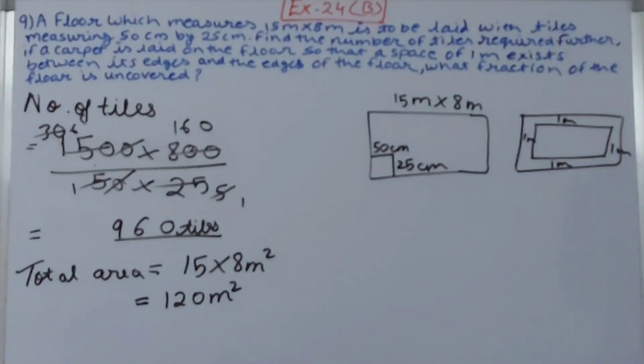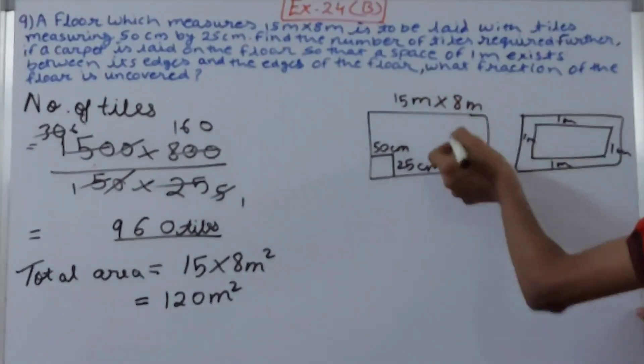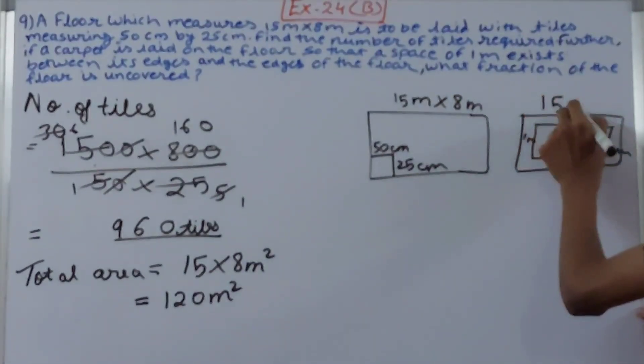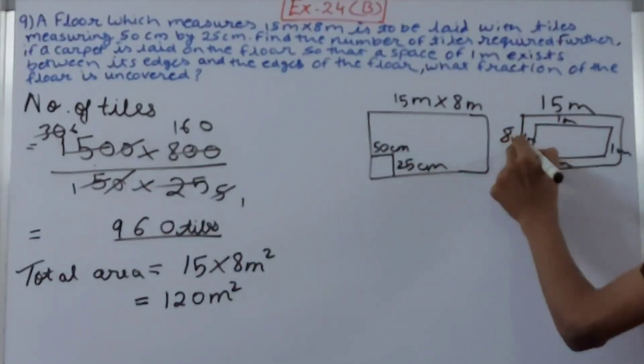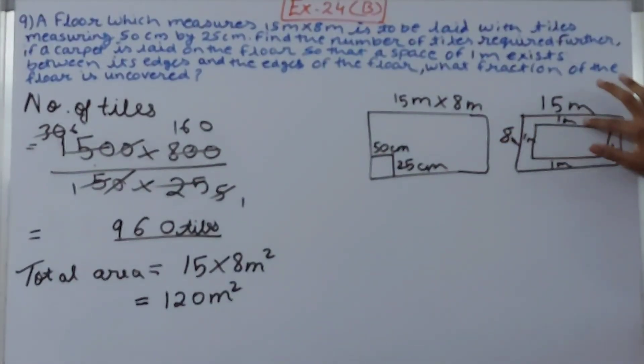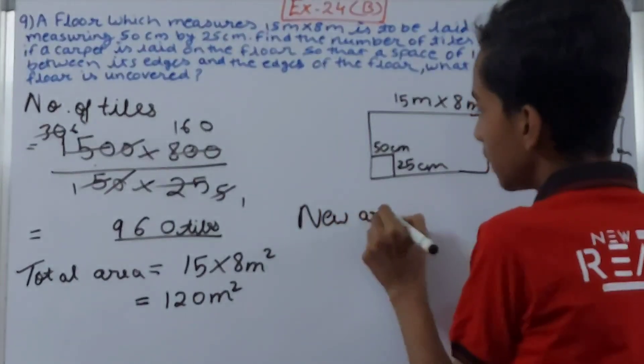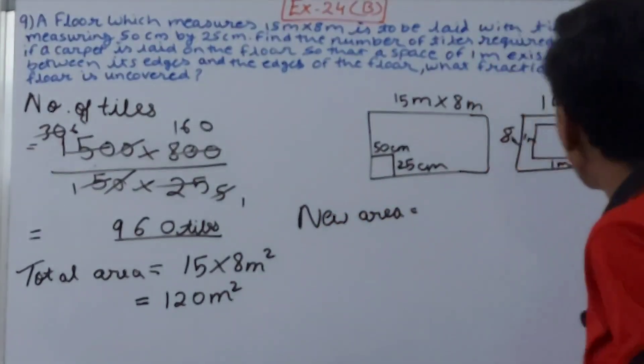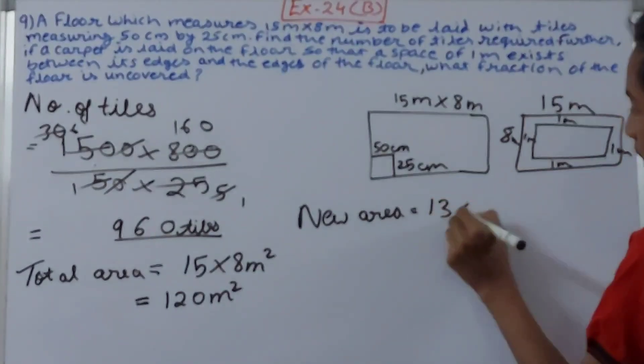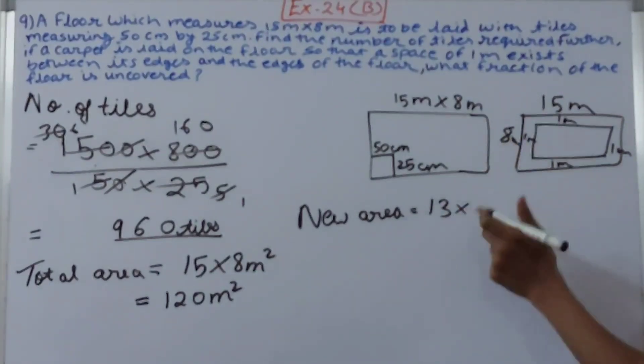Now see here that basically what we have to see here is that this one meter, this one meter, this one meter, and the dimensions here are 15 meters, 8 meters. So see here, 15, so 1 and 1 from here, so 15 minus 2. Now new area, let's calculate the new area, that will be 15 minus 2 becomes 13 into 8 minus 2 becomes 6.